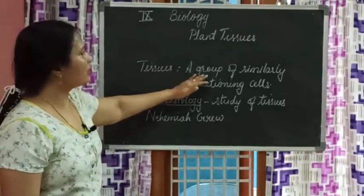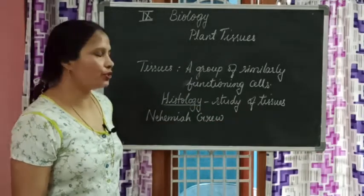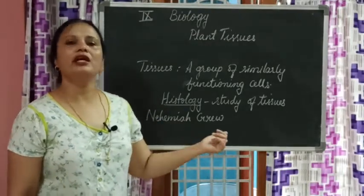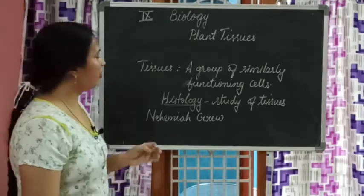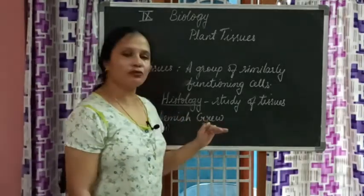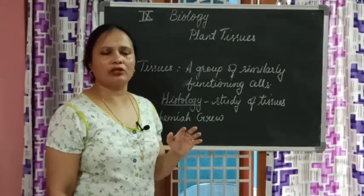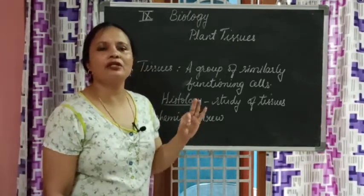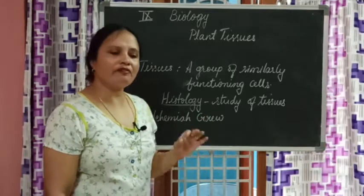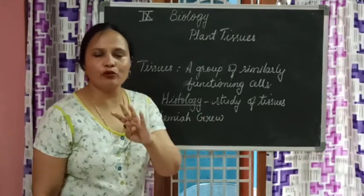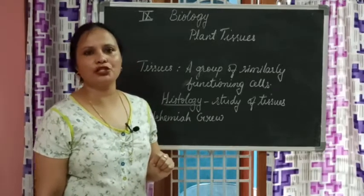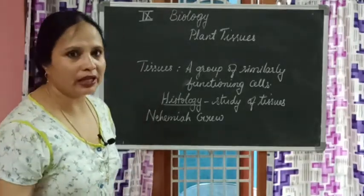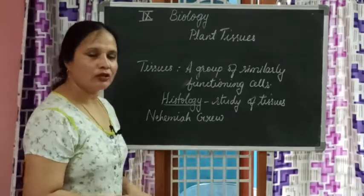So different parts of the plant perform different functions. To recap: a group of similarly functioning cells is called a tissue, and the study of tissues is called histology. The scientist who made a major contribution here is Nehemia. He wrote four books covering everything related to the anatomy of plants — every question has been answered in those four books.